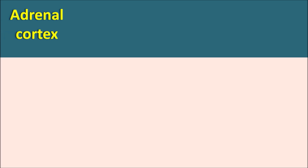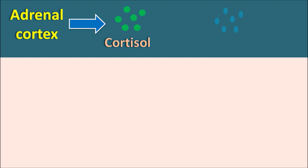From the adrenal cortex, mainly three types of hormones are released. One is the glucocorticoids, which includes cortisol as well as hydrocortisol. Similarly, another one is aldosterone, which is mainly having the mineralocorticoid activity, and apart from these, androgens can also be released from the adrenal cortex. Cortisol and aldosterone are commonly known as corticosteroids, and these hormones act on the corticosteroid receptors which have different affinity.